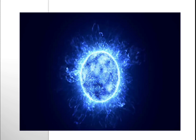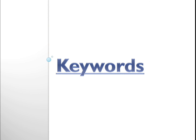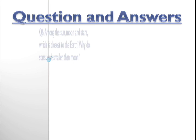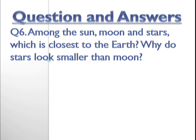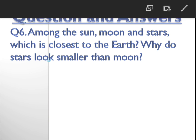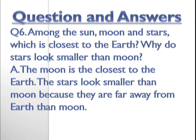So this is about the stars, children. I have given few keywords in your daily schedule — please learn them and write it in your classwork, and also read the content book page number 109, 'The Stars', and underline the keywords I have given in the daily schedule. Coming to your question answers: among the sun, moon, and stars, which is closest to the earth, and why do stars look smaller than the moon? The moon is nearer to us because moon is revolving around the earth. So moon is the closest one. Why do stars look so small? Because they are very far away from us. Moon is the nearest, then the sun, then these stars are very, very far from us. That's why they seem to be very small in the night.